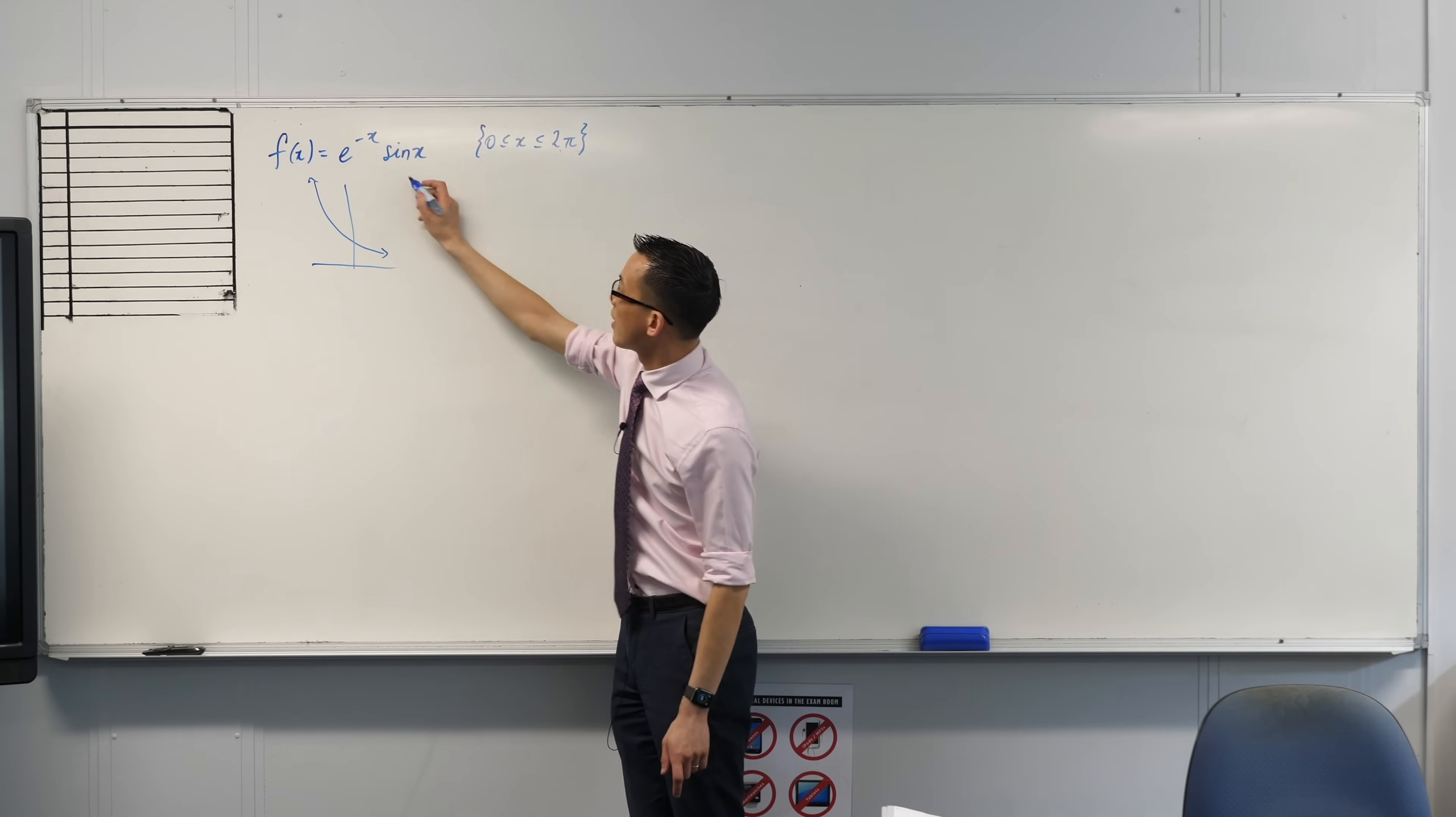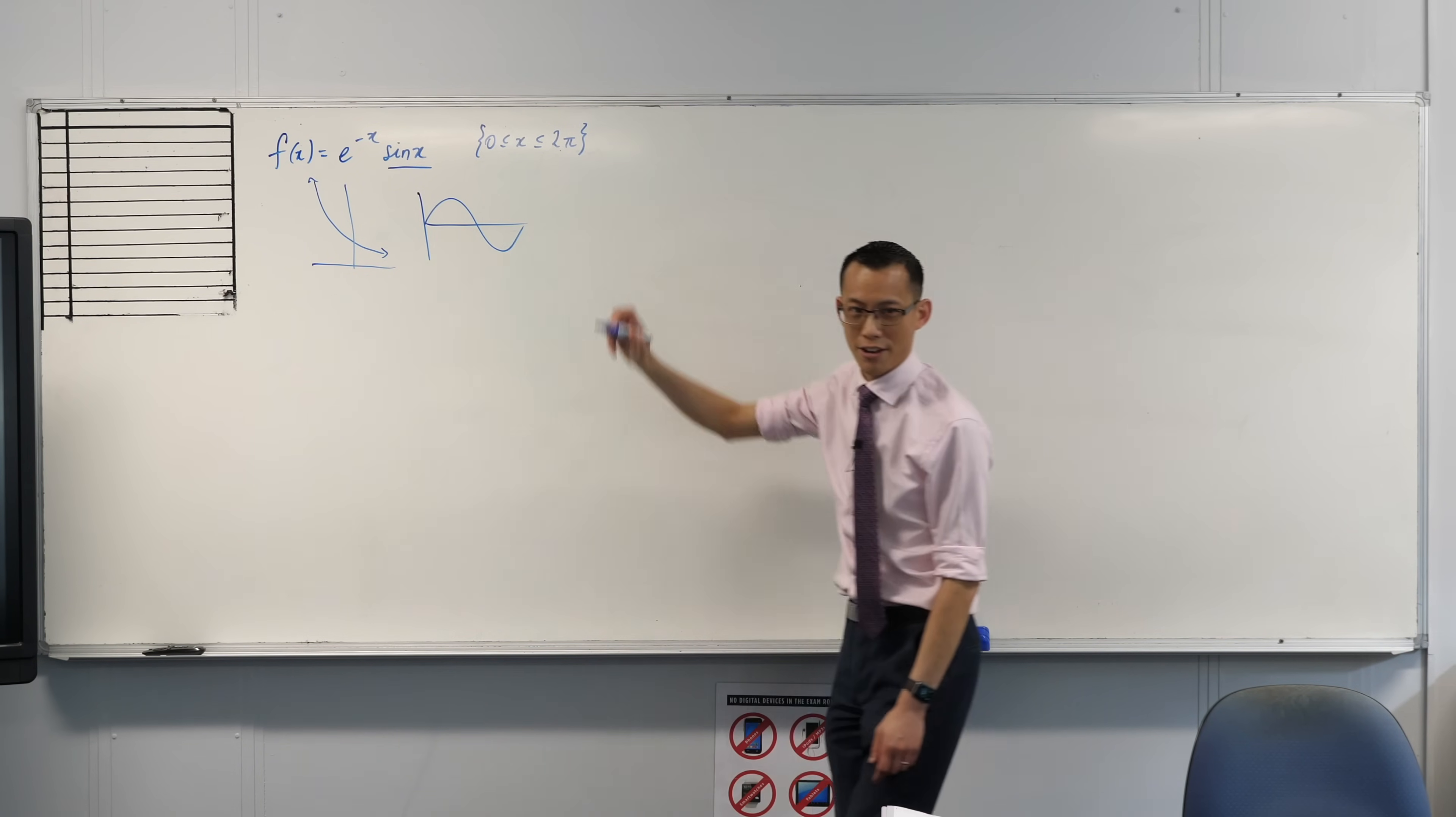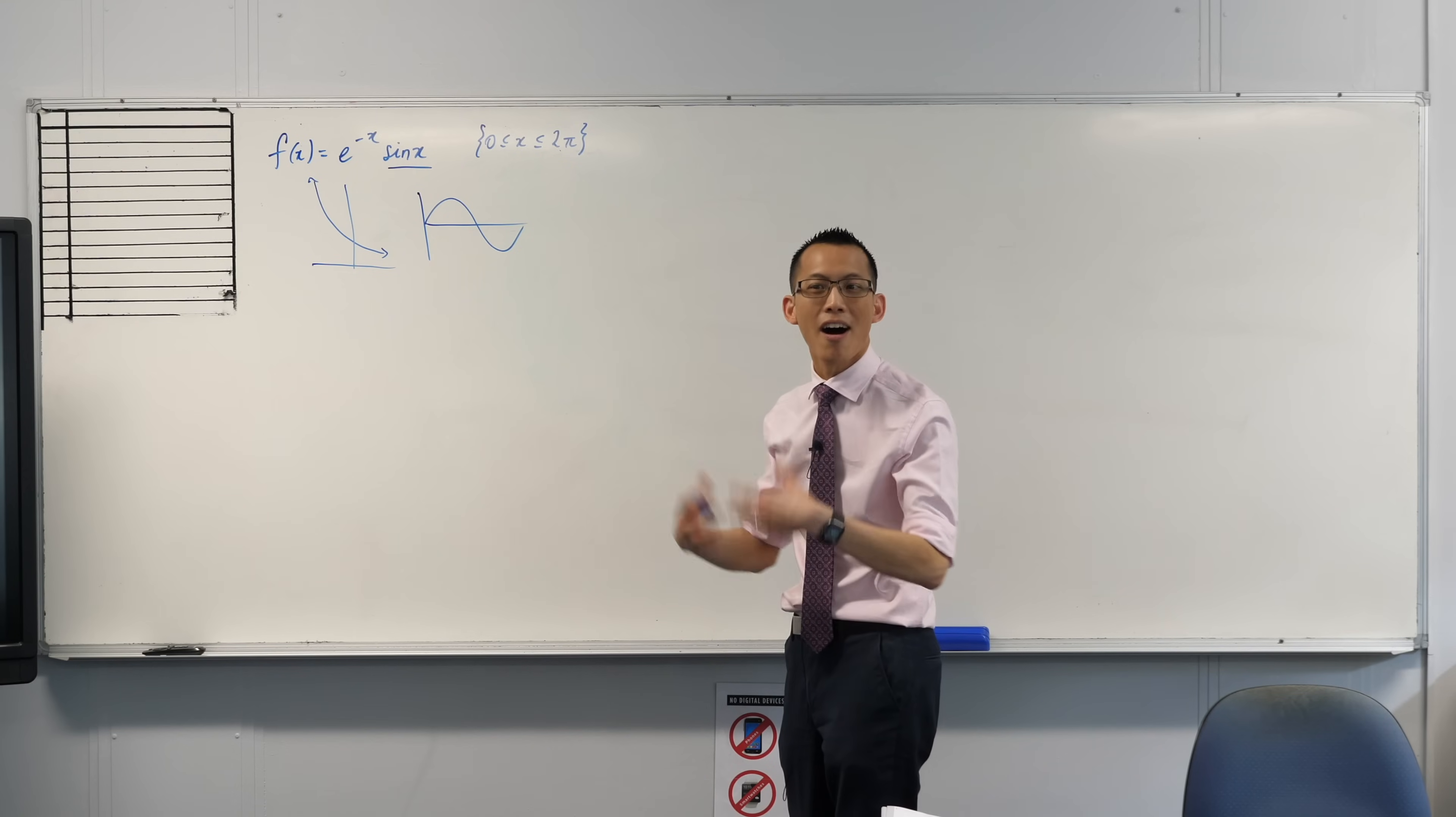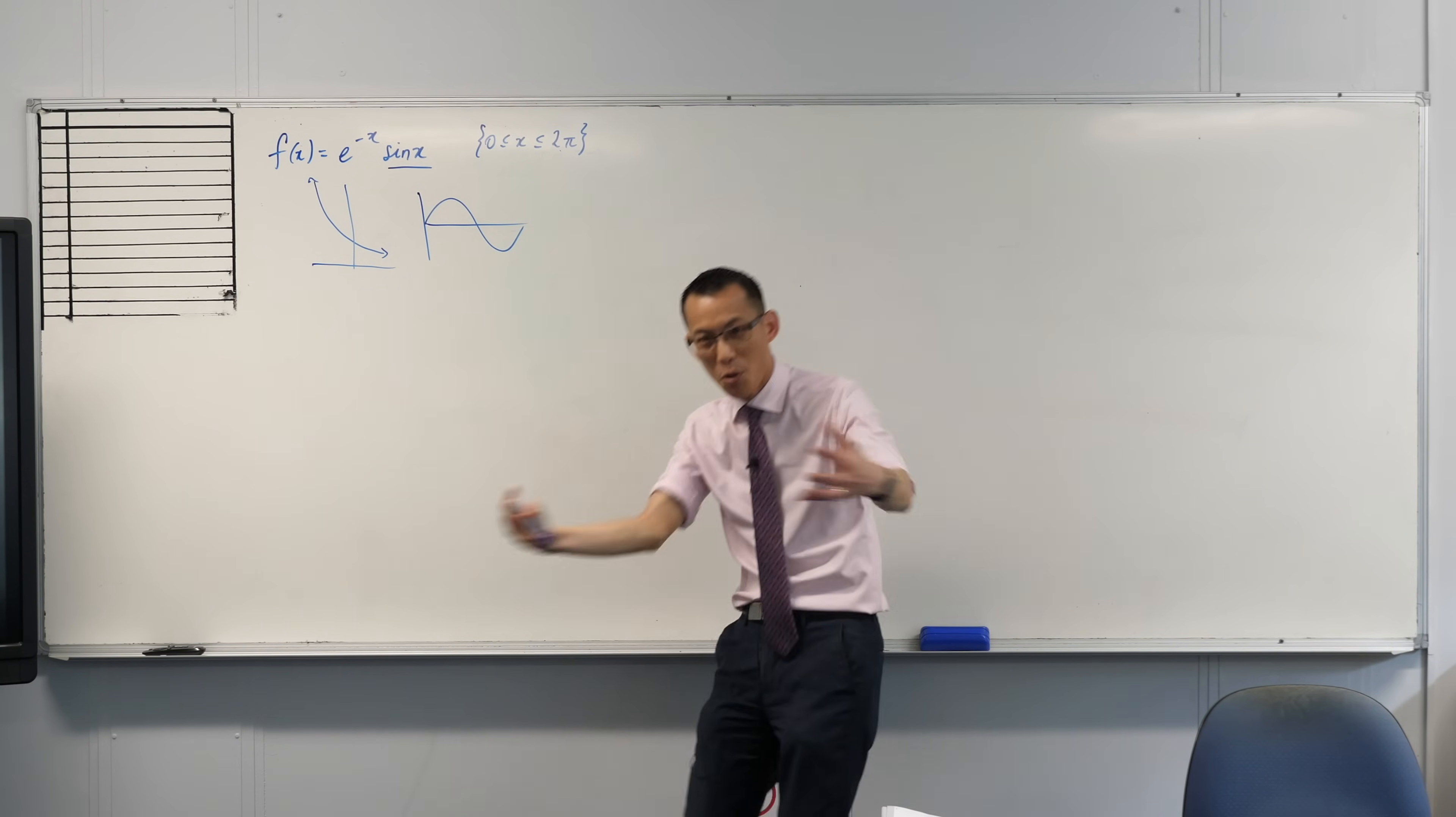And then this part over here, this is a trigonometric curve. So these are the kinds of things which oscillate up and down. An electromagnetic wave or a tide that goes up and down, this is the kind of shape that it makes.